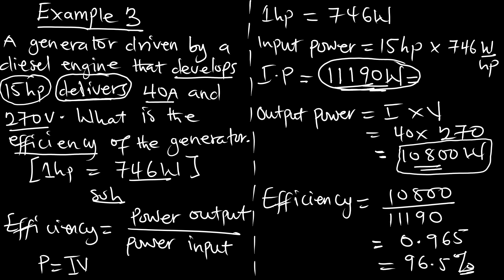So the generator is 96.5% efficient. If you ever get an efficiency greater than 100%, you need to go back and check your answer — it should always be less than 100%. Thank you for watching this episode on electric power. See you in the next episode. Please subscribe, like our videos, and share.